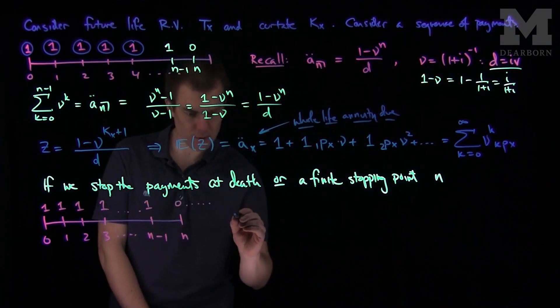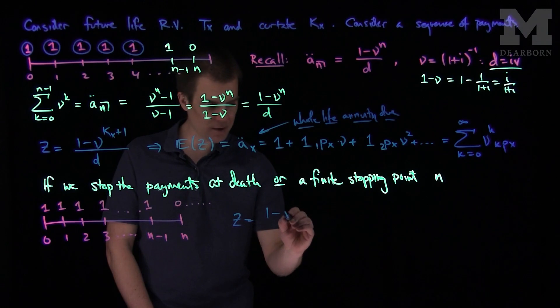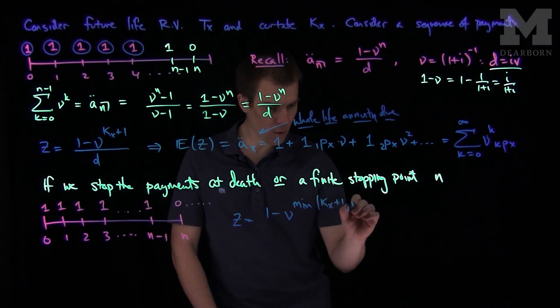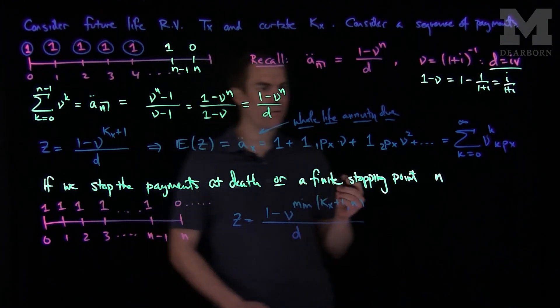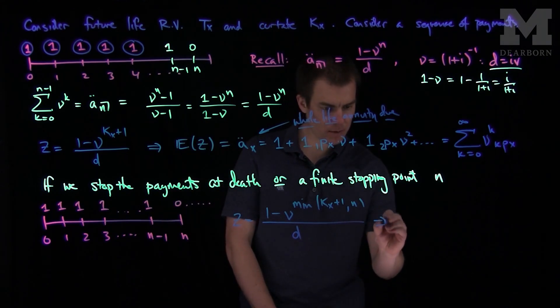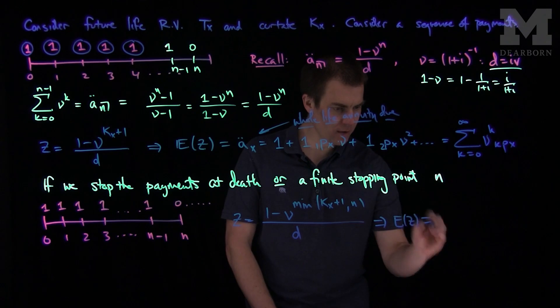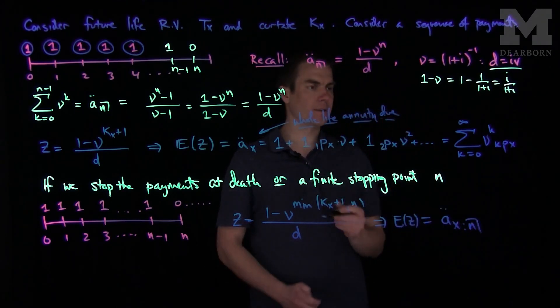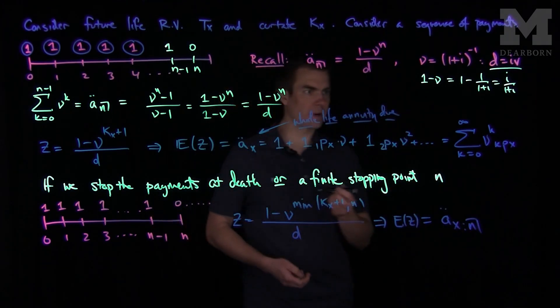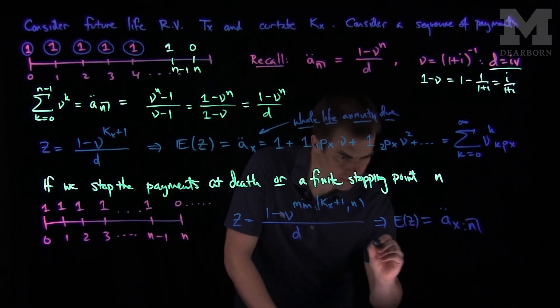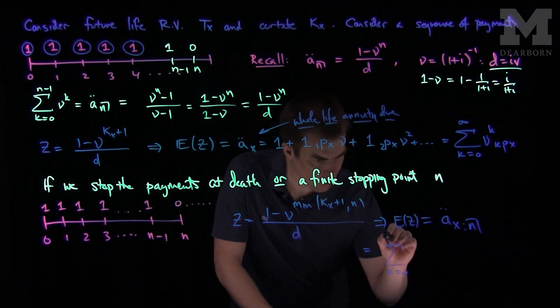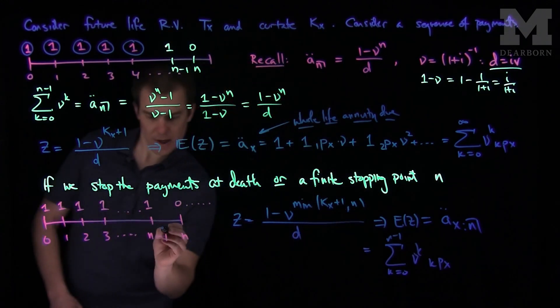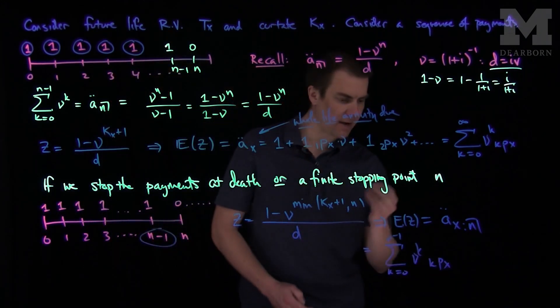We have a random variable. And so the random variable here is z. We have the same form. It will be 1 minus nu to the minimum, the smaller of Kx plus 1 or n, over d. And if we compute the expected present value of this random variable, E of z will be denoted for this. This is our term, A x with an n over here, double dot. And the same formula is true. What we'll have is the sum, K goes from 0 up to n minus 1 of nu to the k, K Px, where the last payment occurs at this time n minus 1, provided that you have survived up to that point in time.